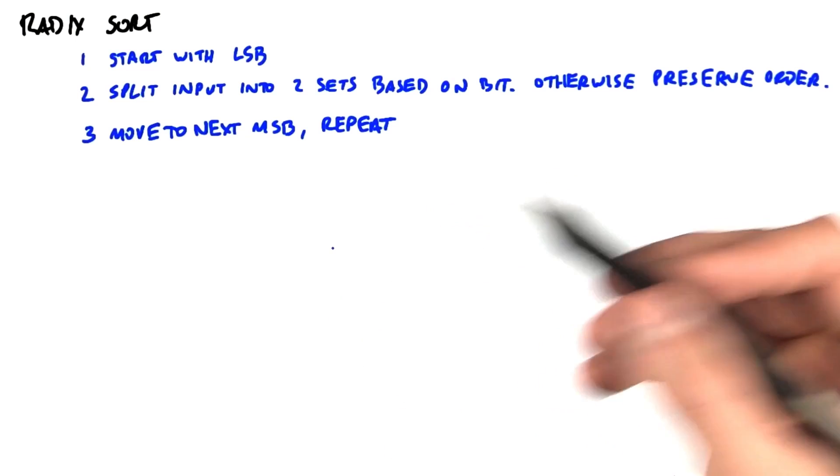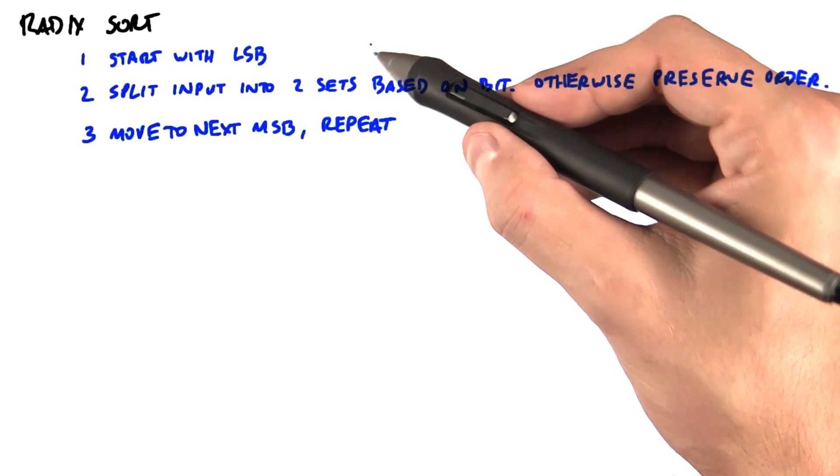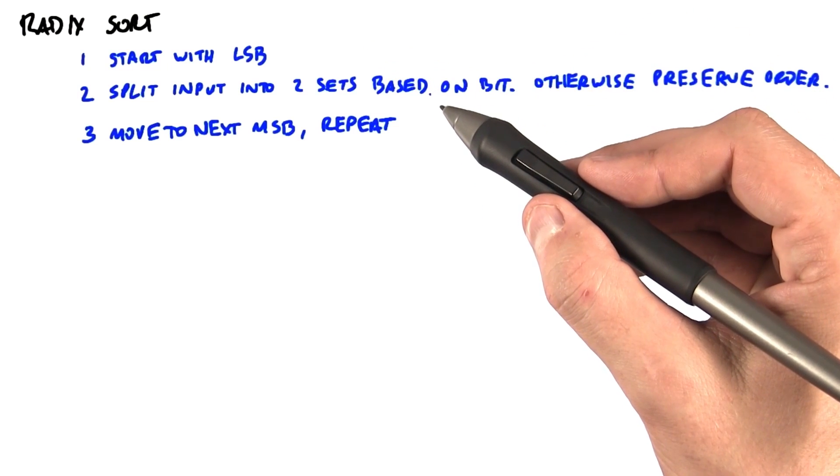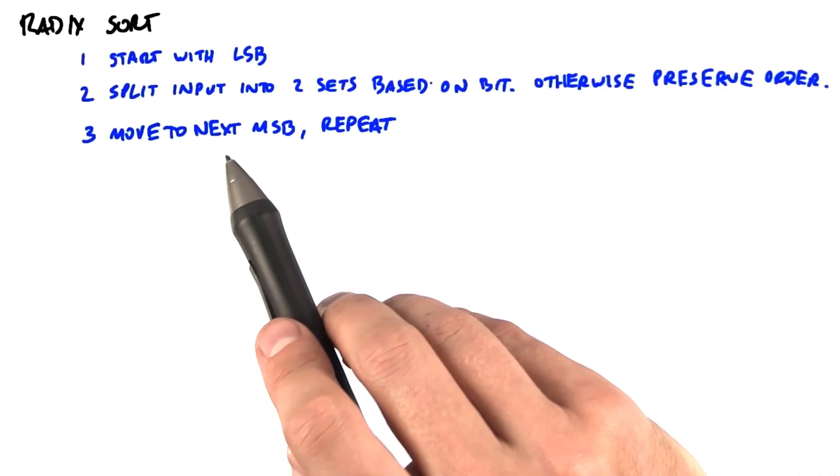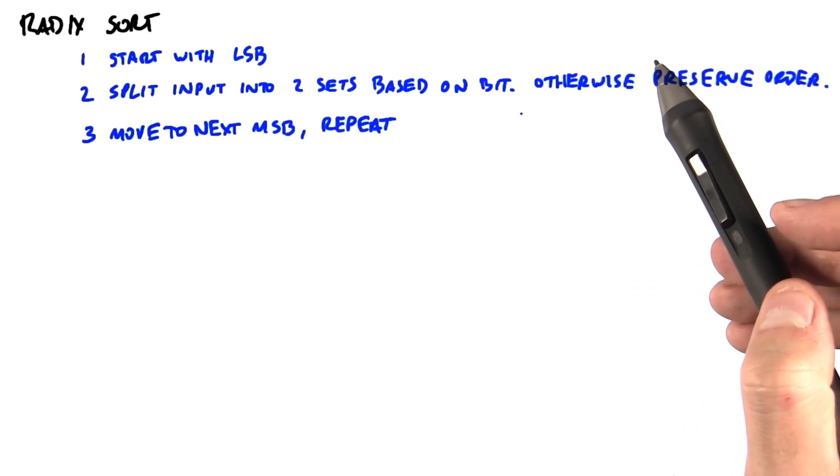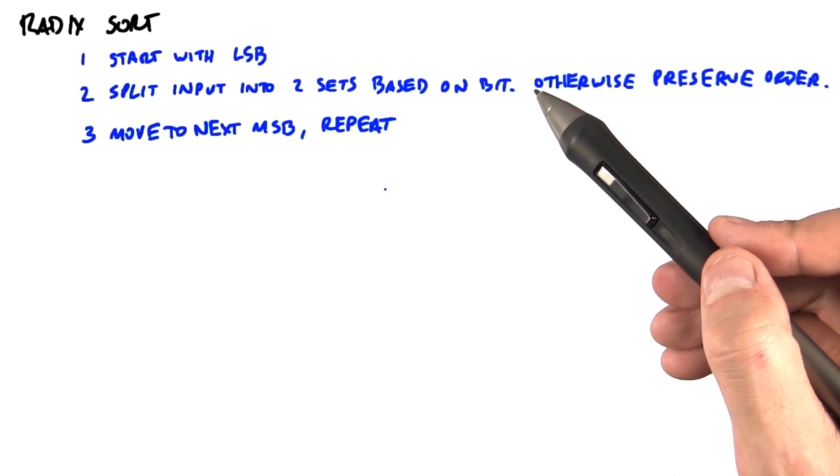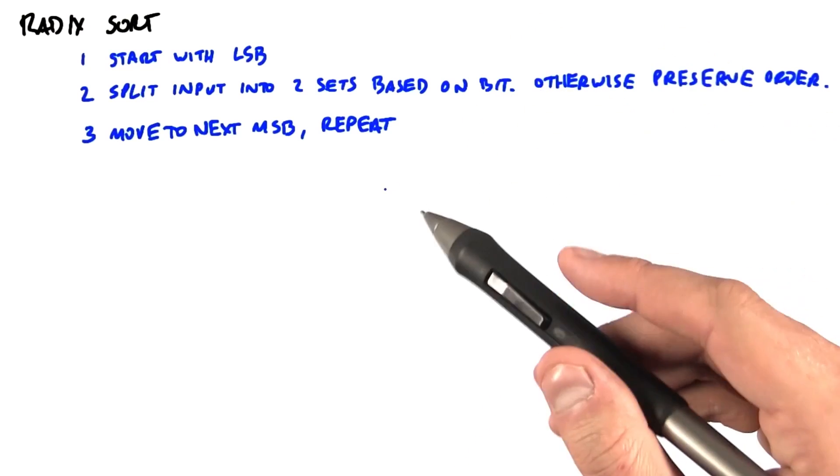So the algorithm for radix sort is as follows. Start with the least significant bit of the integer. Split the input into two sets, those that have a zero with this particular bit location and those that have a one. Otherwise, maintain the order. Then proceed to the next least significant bit and repeat until we run out of bits.